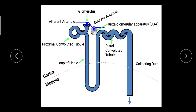The tubules normally reabsorb over 90 percent of the glomerular filtrate. The rest of the filtrate and tubular secretion pass into the bladder and are excreted as urine. This is the normal urinary function of the kidney.